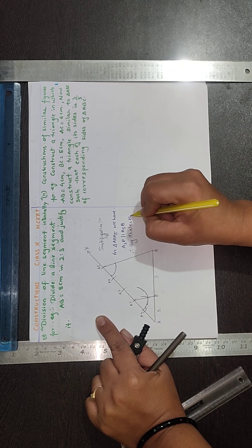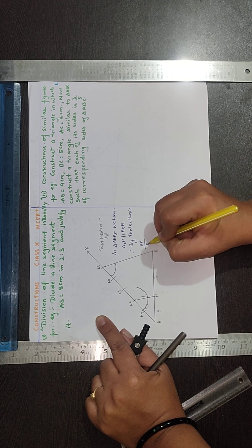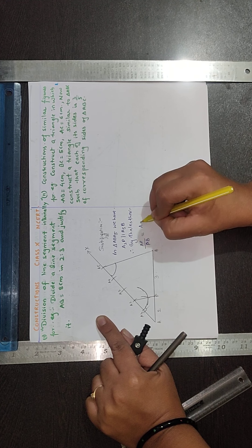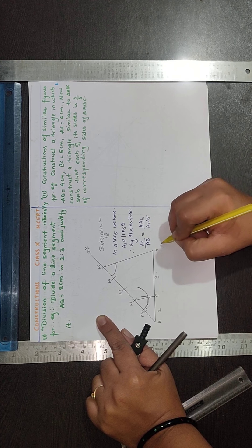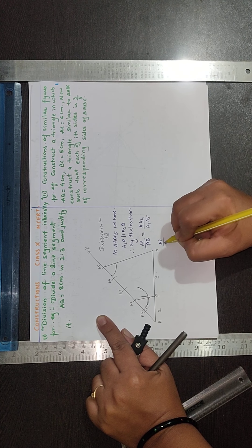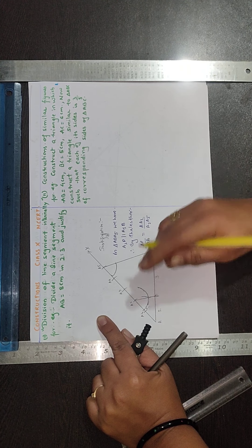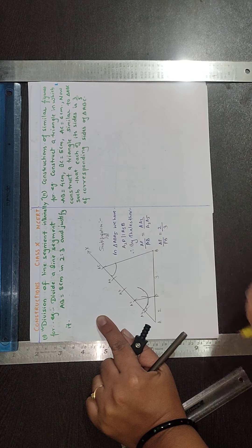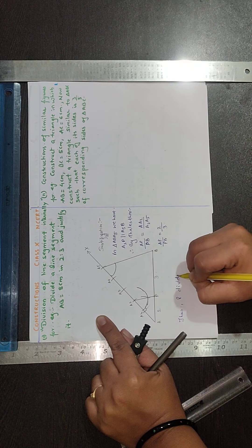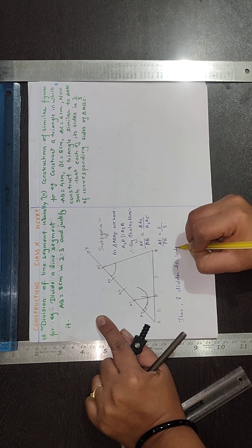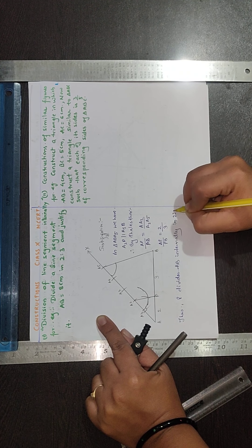by Thales theorem we will get AP upon PB is equal to AA2 upon A2A5. So AP upon PB equals 2 upon 3. Thus P divides AB internally in 2 ratio 3.